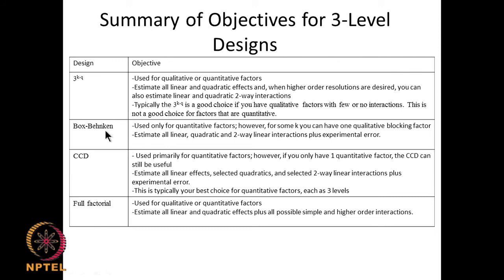The Box-Behnken design can be used for quantitative factors and supports linear, quadratic, and two-way linear interactions. The CCD has the advantage of looking at almost 5 different levels because we have star alpha-plus and alpha-minus, unlike other designs. With CCD we can estimate linear effects, quadratic effects, and two-way linear interactions. The full factorial 3^k will have a large number of experiments and supports qualitative or quantitative factors, linear, quadratic effects, and all types of interactions — two-way, three-level interactions and so on.